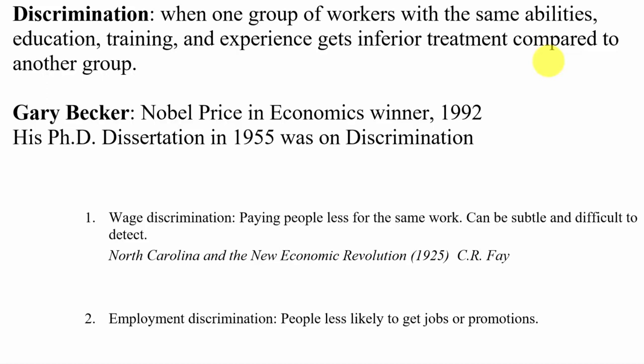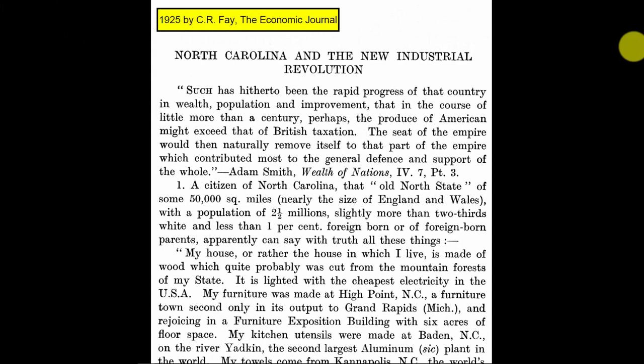Going back in history, things weren't so subtle. Almost a hundred years ago, there's a fascinating article called 'North Carolina and the New Industrial Revolution' by C.R. Fay, published in the Economic Journal back in 1925. A British economist, Fay took a trip to the United States, toured around, and when he returned to Britain wrote this article describing North Carolina's economy for the entire world — fascinated by how it worked.